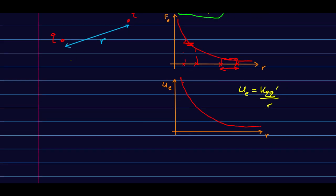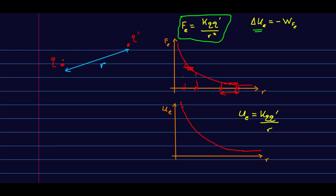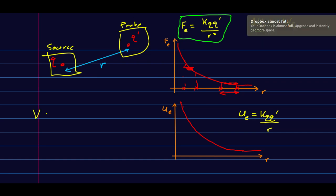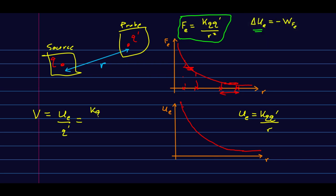But now that means we know how to find the potential around a point charge. If we think of this one as our source and this one as our probe, so we're mapping out the potential due to this charge q, then our potential is going to be Ue over q prime. That's our probe charge. So that's just kq times q prime over r, all divided by q prime, and that's just kq over r.